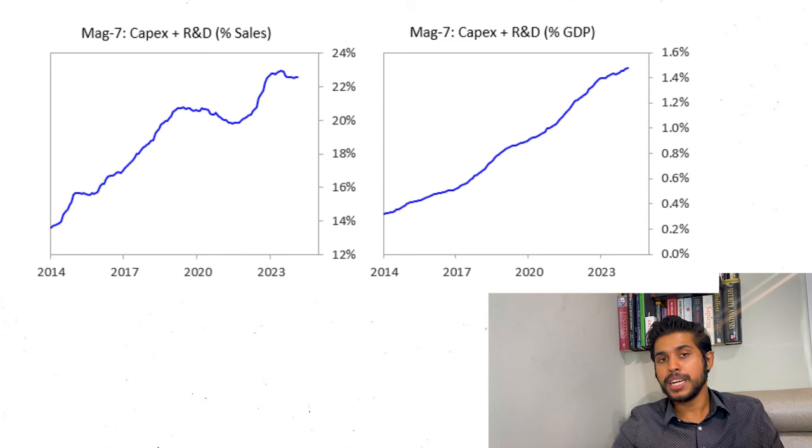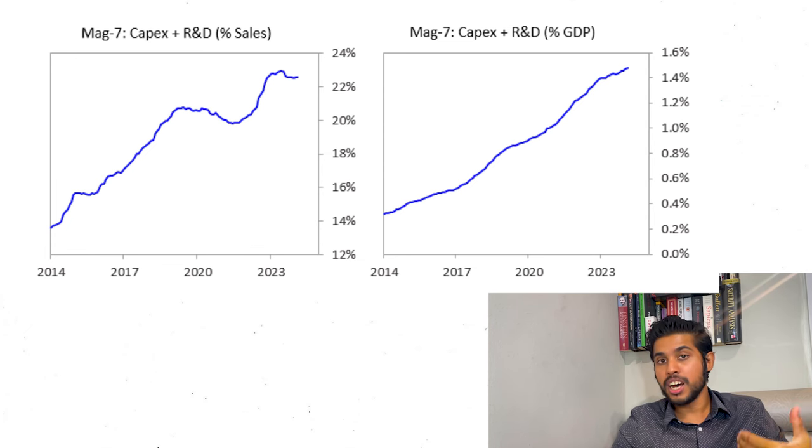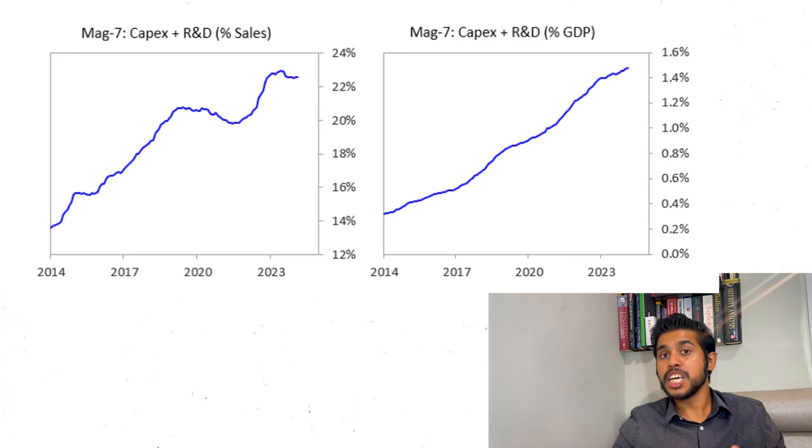We'll start with point number six — companies investing in future growth and spending a lot of money. Looking at the Magnificent Seven, we can see that Nvidia and even Meta are investing a lot in the future. I would not call this a bubble indicator because they are among the most innovative companies in the world. When we look at Meta investing in the metaverse, in AI, in AR and VR, these are good investments.